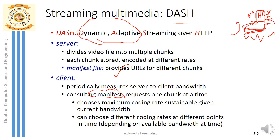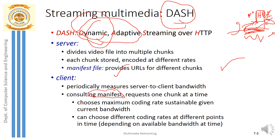When congestion is high and bandwidth is low, the client opts for the low version. When bandwidth increases and congestion decreases, the client can switch to the high version. This dynamic interaction between client and server through the manifest file happens at runtime, hence 'dynamic adaptive streaming over HTTP.' This is implemented in YouTube today.